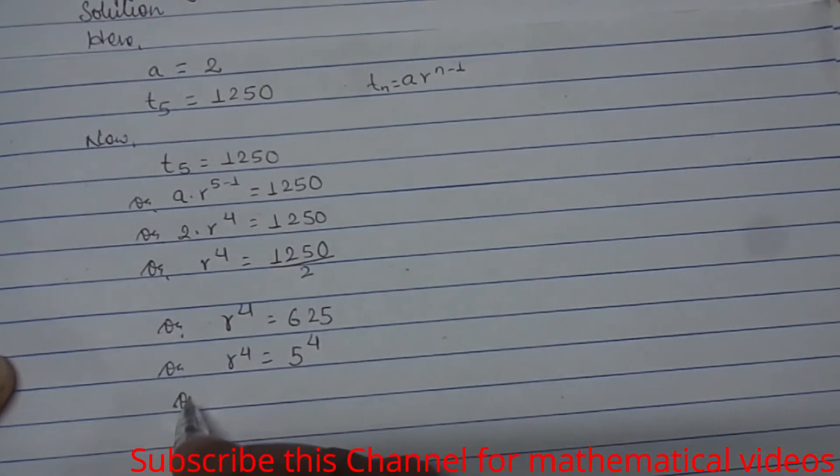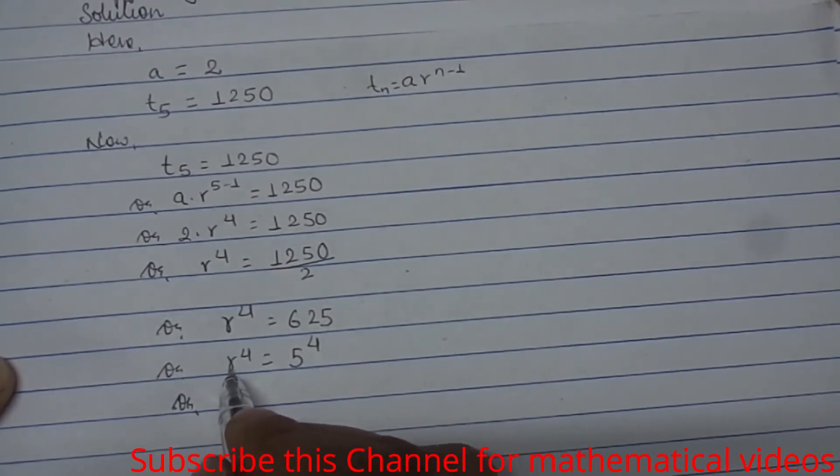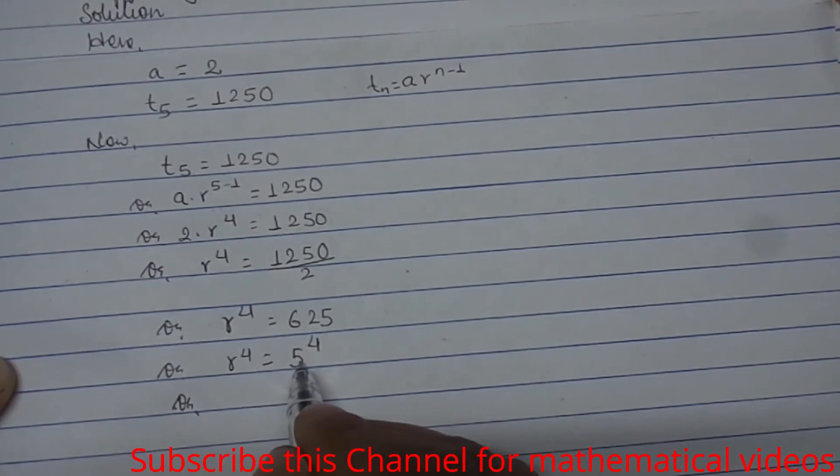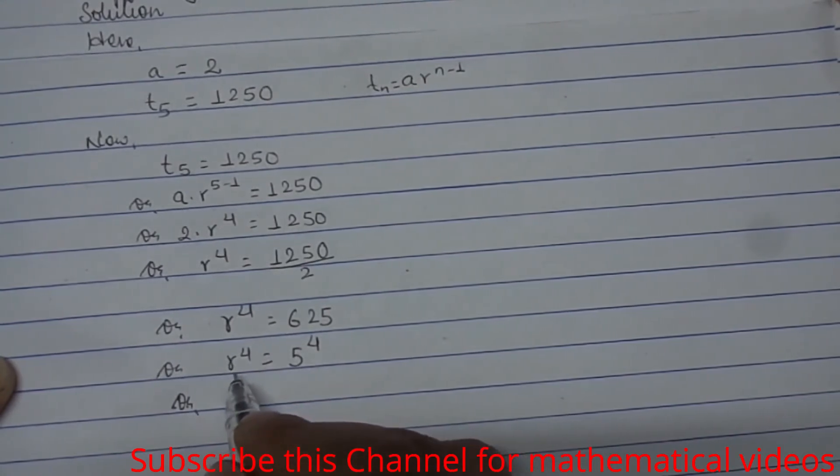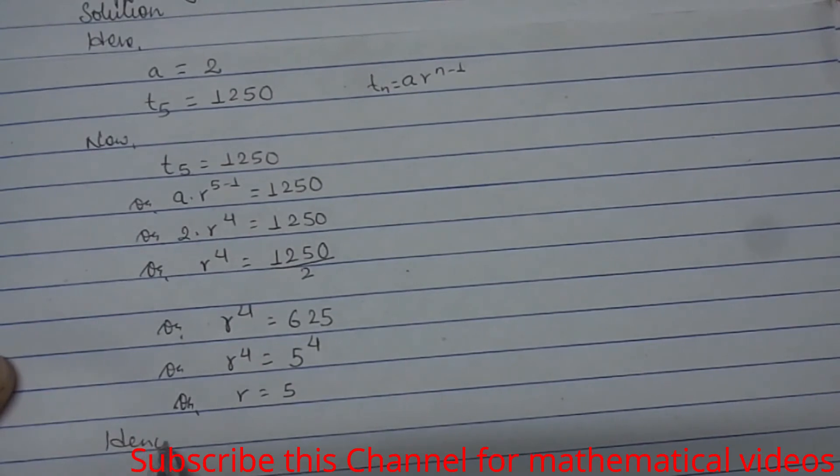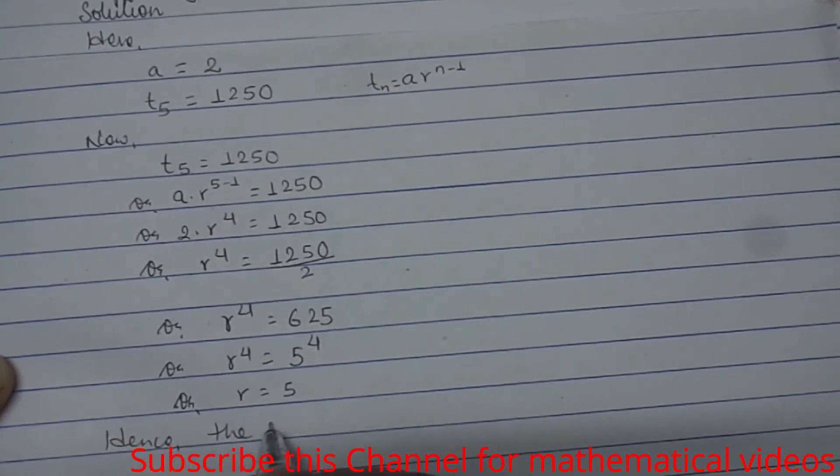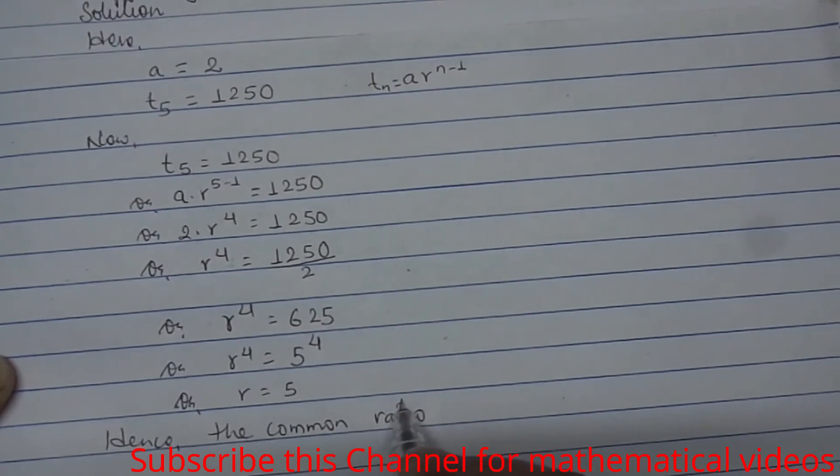Therefore, we can compare: r to the power 4 and 5 to the power 4. Both terms have power 4 and they are separated by equals, so we can conclude that r equals 5. Hence, the common ratio is 5.